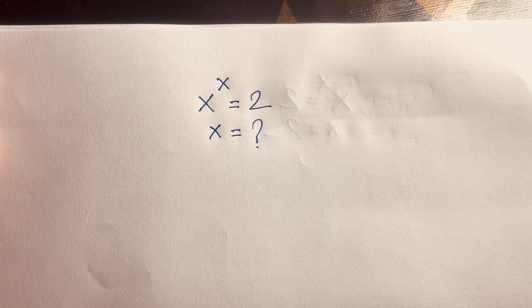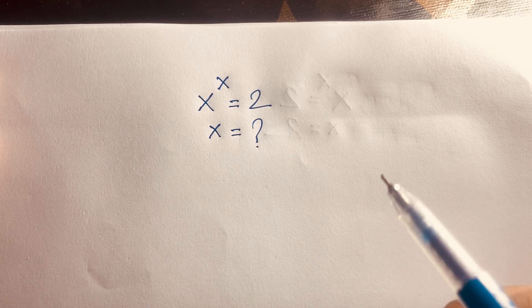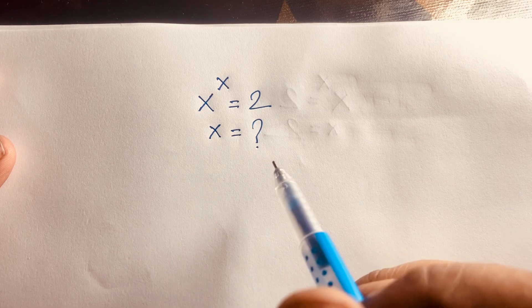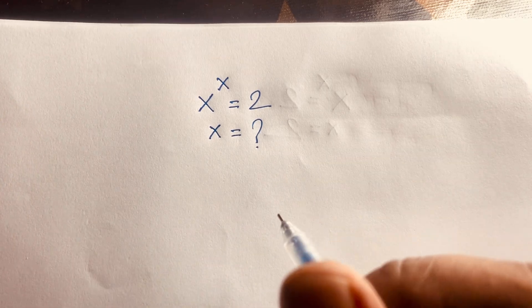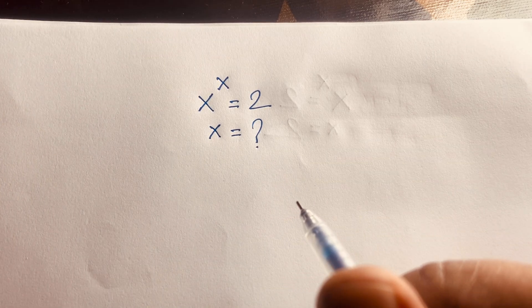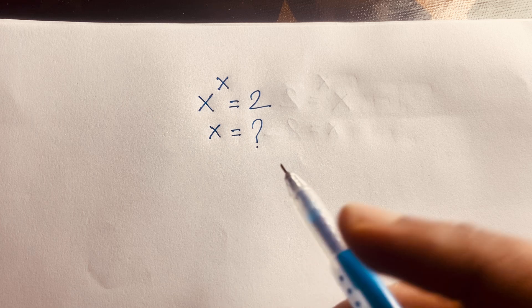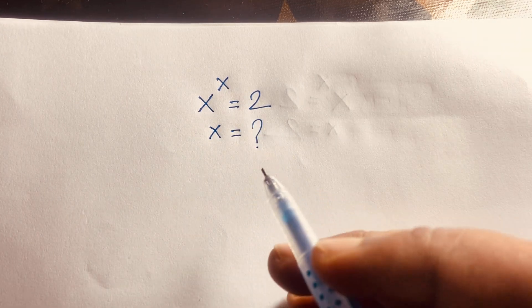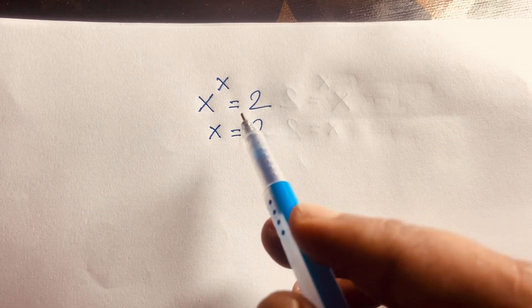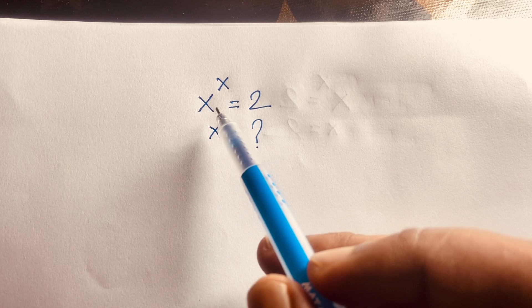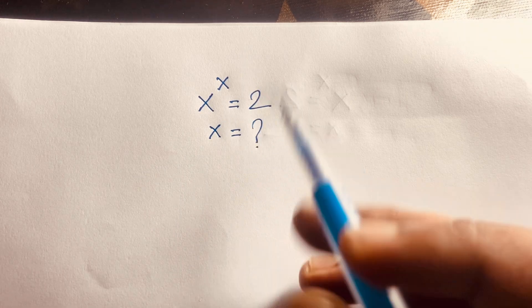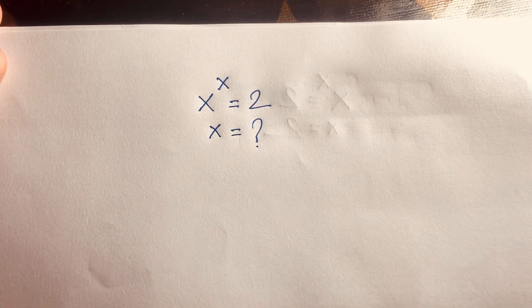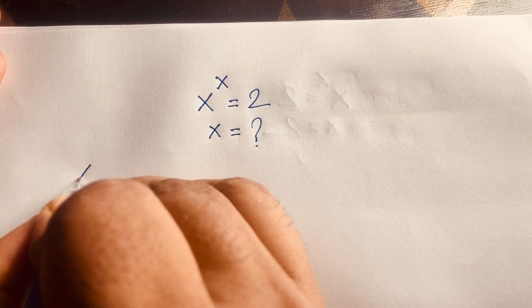In this video we solve the interesting math question: x to the power x is equal to 2. What is x? If x equals 1, then 1 to the power 1 is not equal to 2. If x equals 2, then 2 to the power 2 equals 4, which is also not equal to 2. So how do we solve this question?